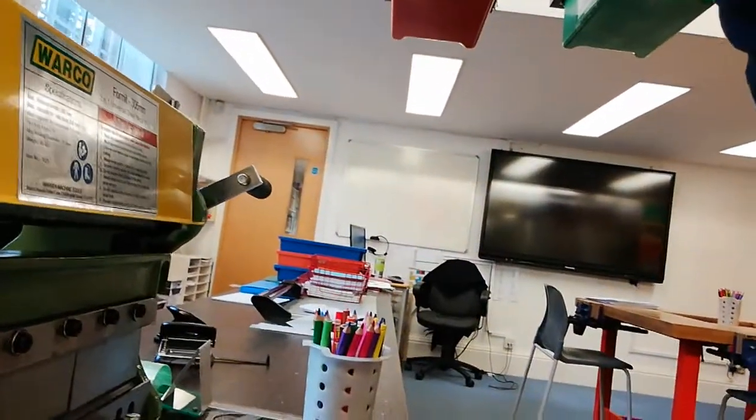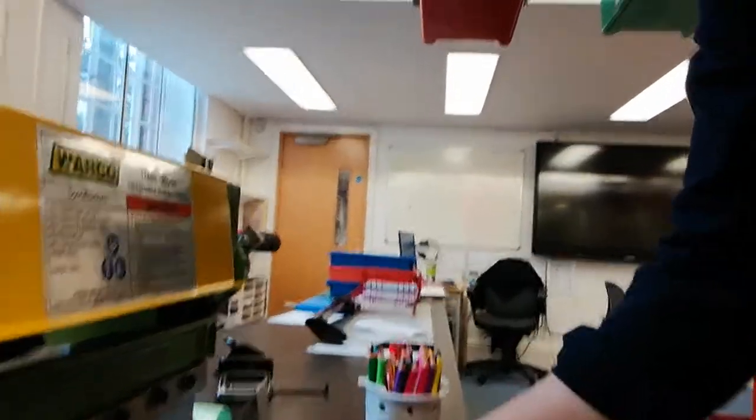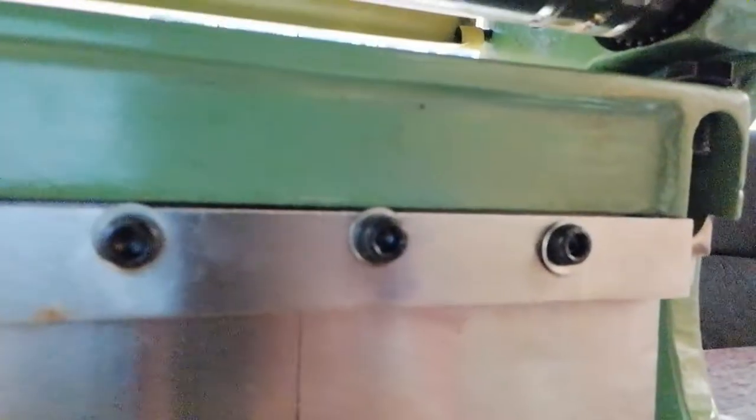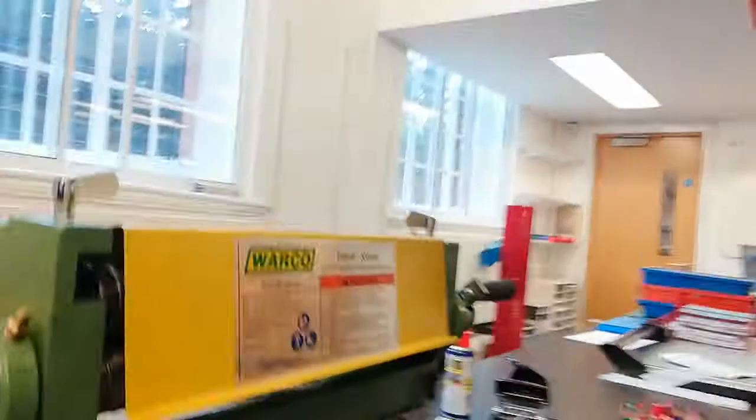You're going to place your material into the guillotine and line up that line you've just marked out so it lands exactly where it's going to shear here. You're going to hold it flat against this marking so it's nice and straight but also check that you've lined it up.